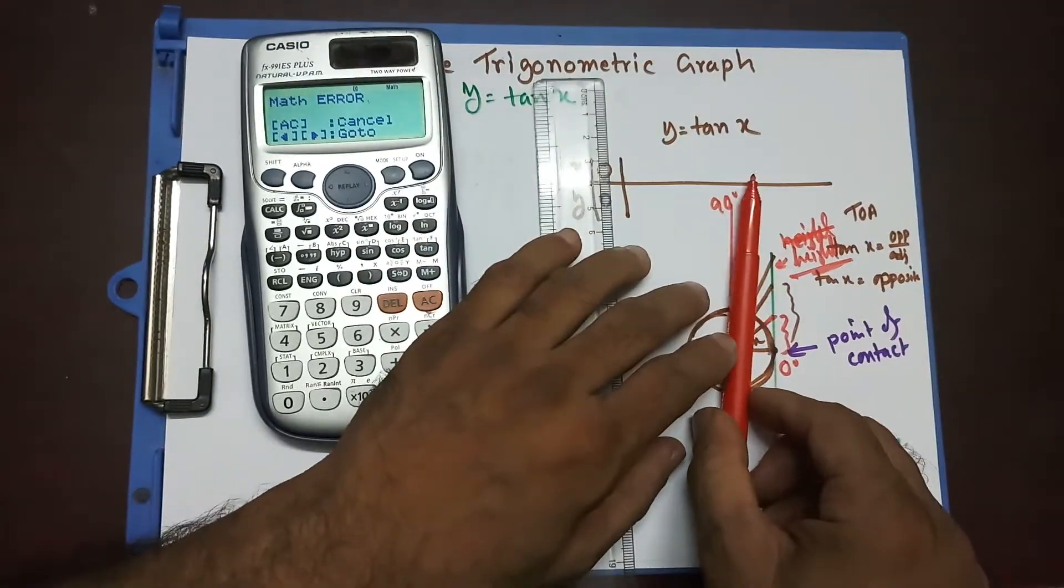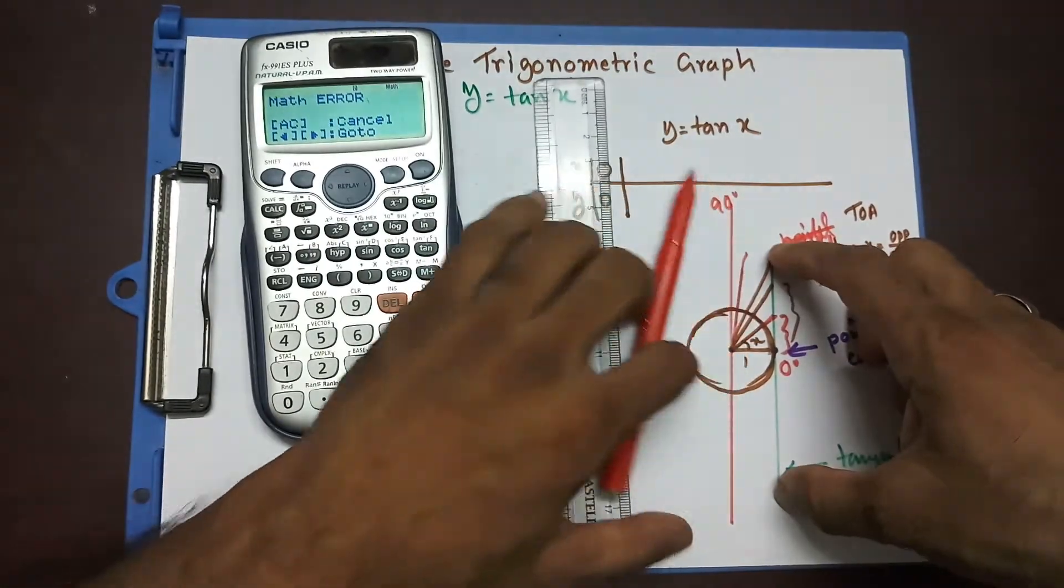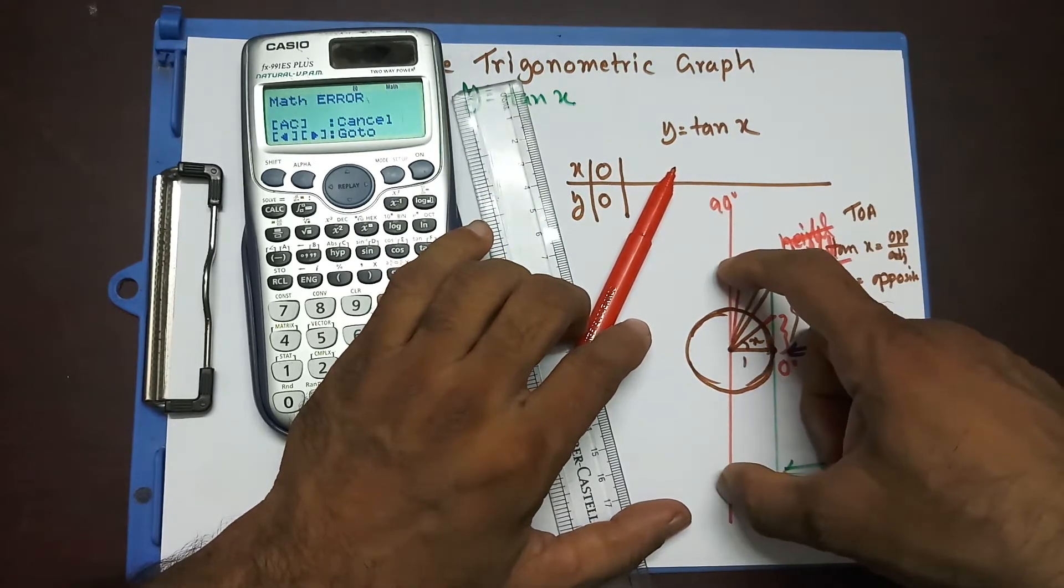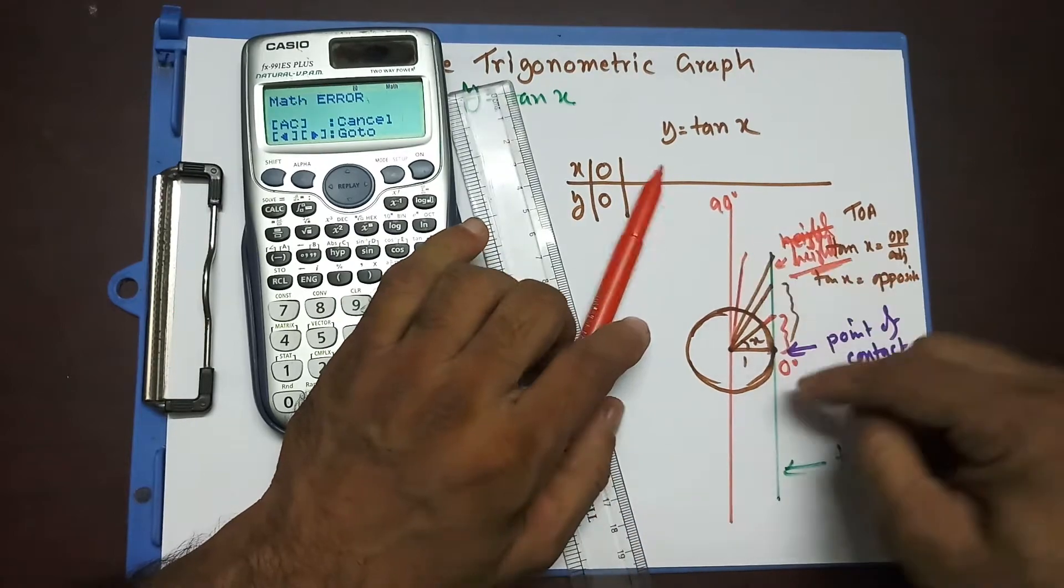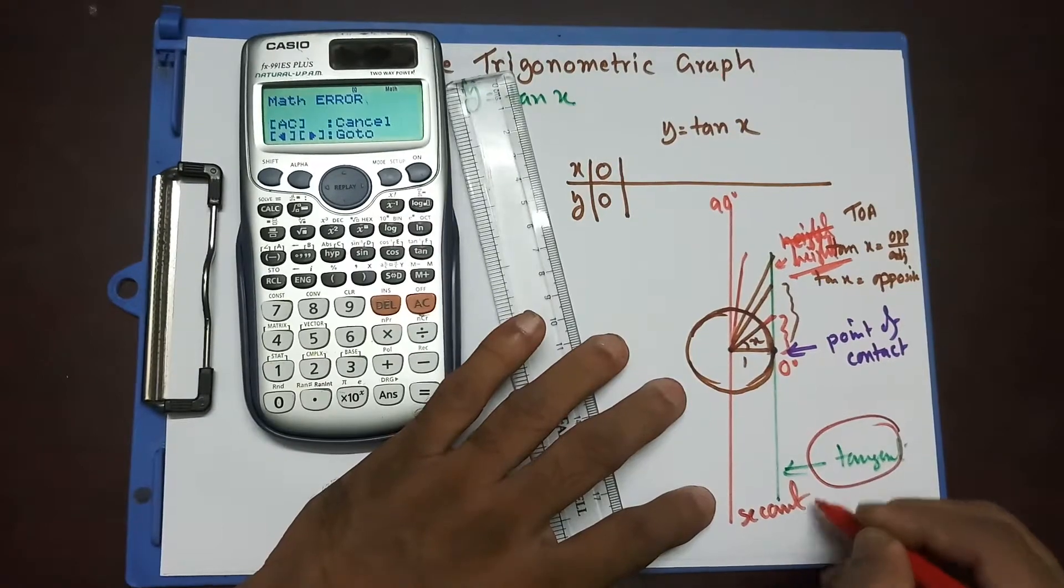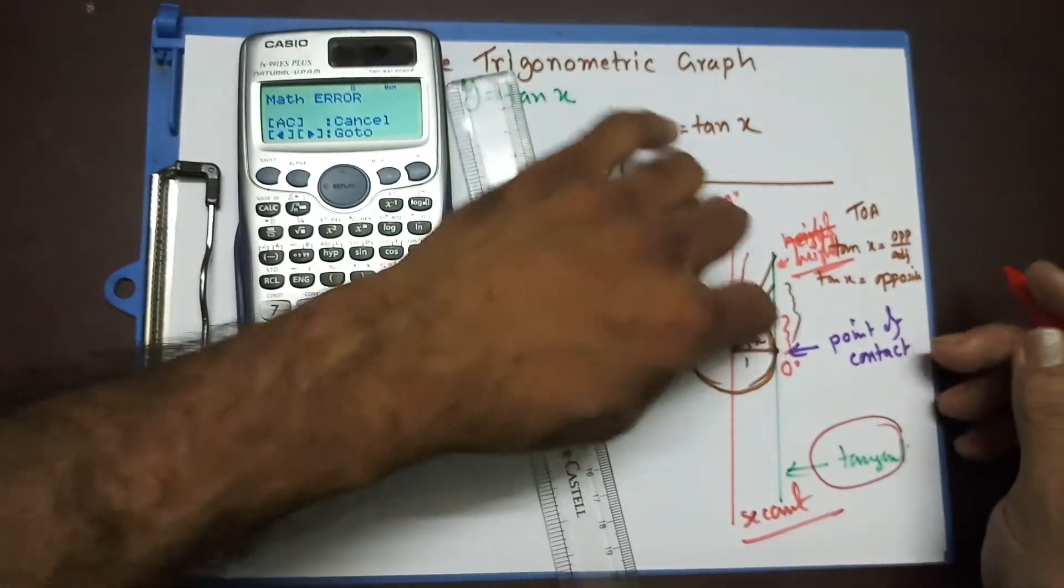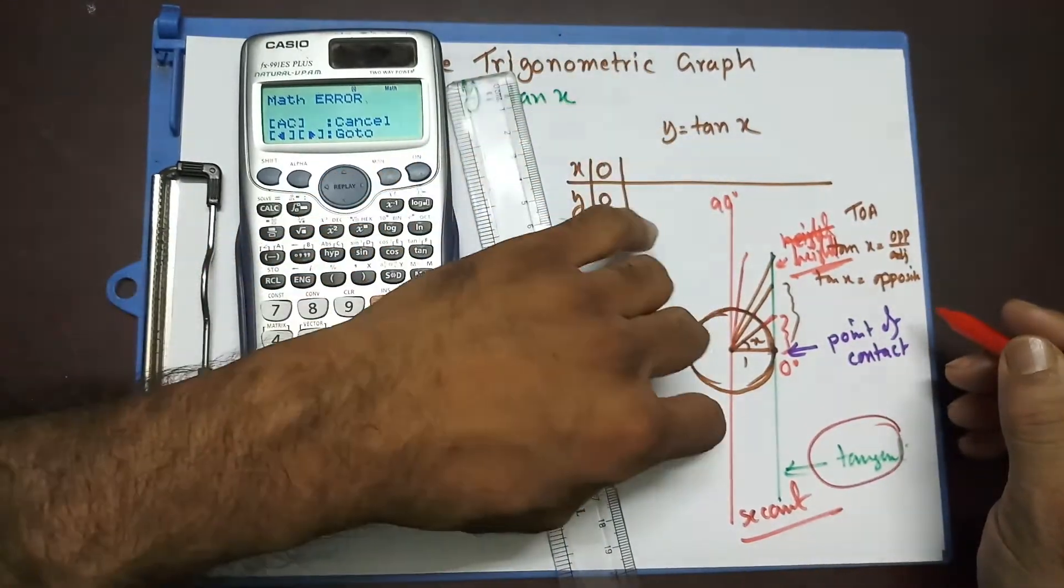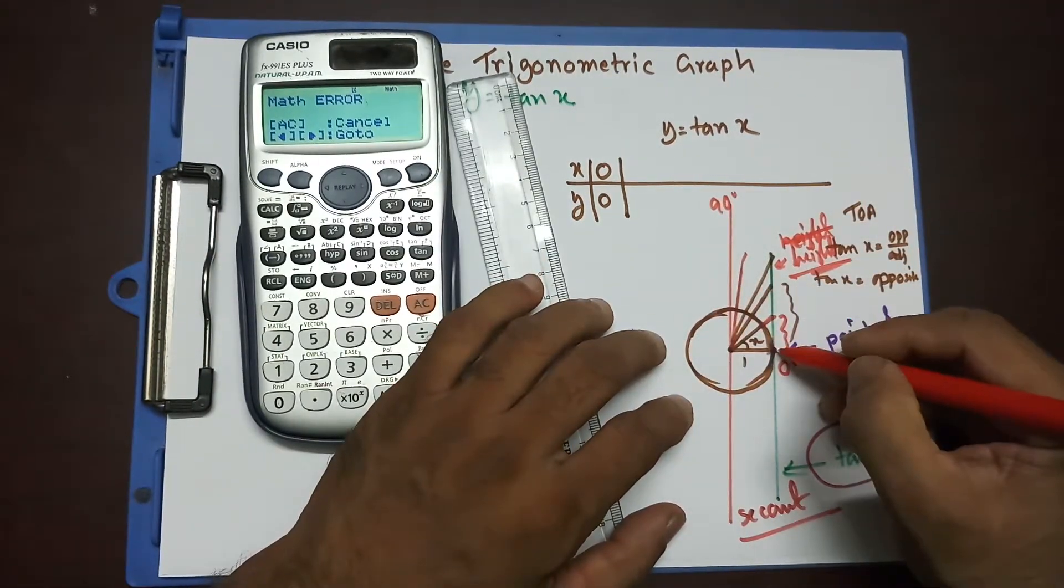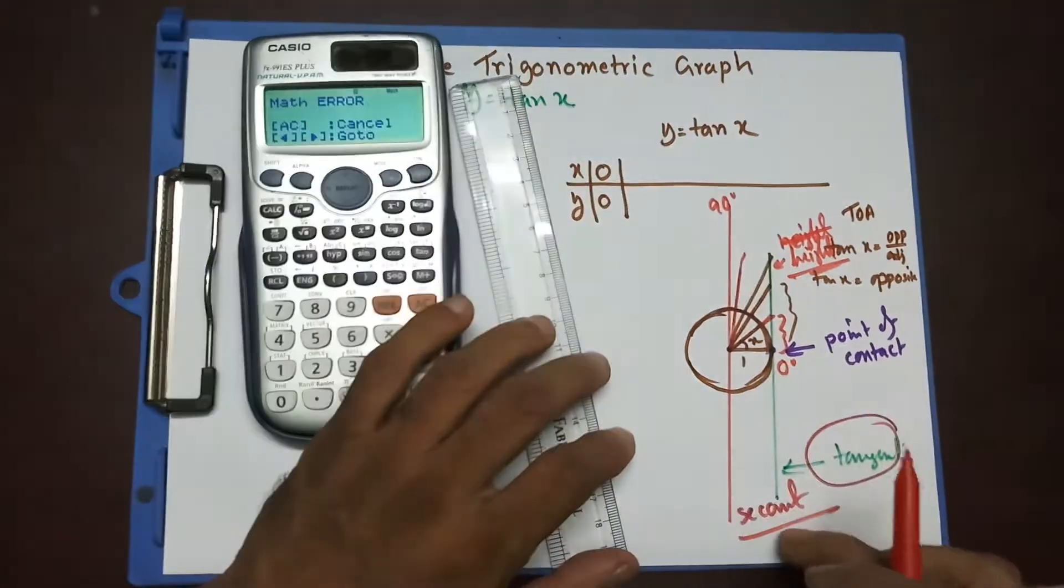But, the problem is, when this line becomes 90 degree, then this tangent must be on this line. Now, it cannot be on this line. Because, when it's on this line, then this line is not going to be tangent. It's going to be secant. Secant line means that when a line passes the circle with two points, it intersects two points and keep moving on.